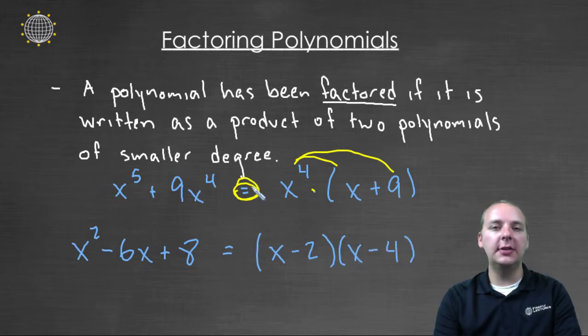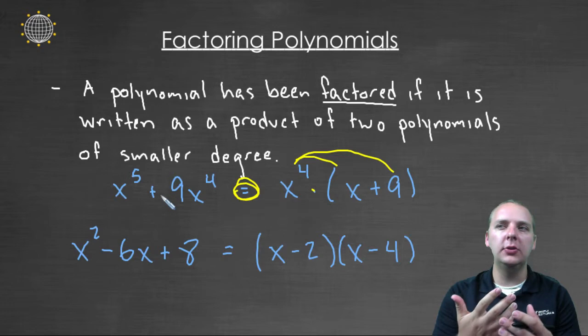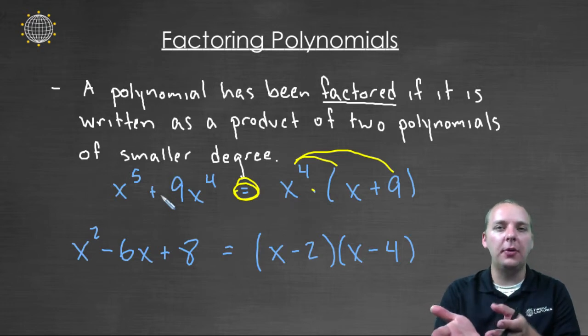If you look back at the first example, you can guess what I did. We checked our answer by distributing the x to the fourth through x plus nine. But if you start with the left-hand side, noticing they have something in common, you could pull that x to the fourth out, almost using the distributive property backwards. When we pull it out, we create a product.